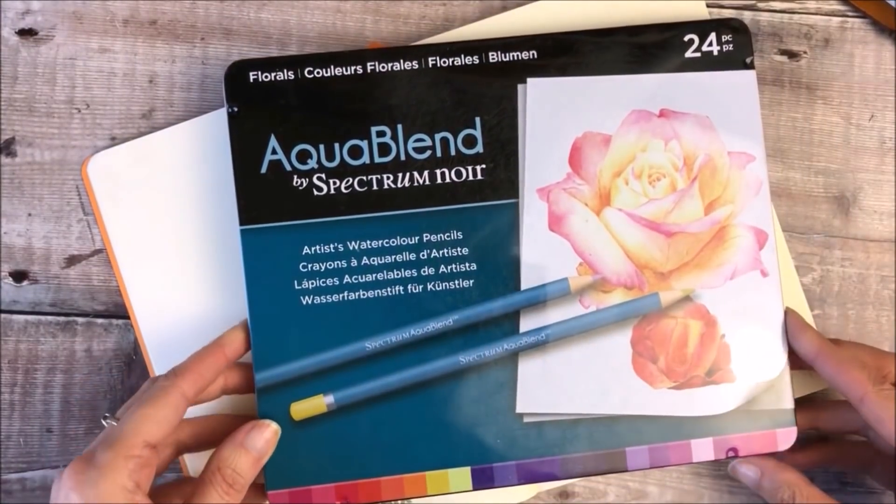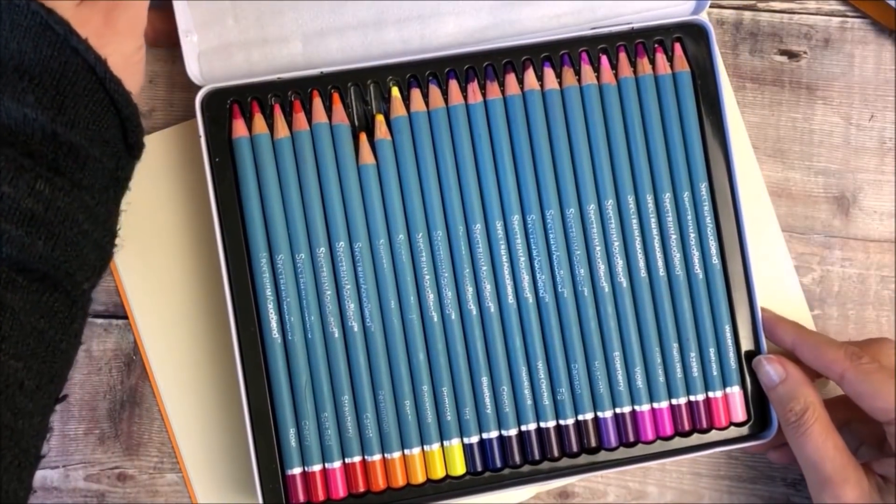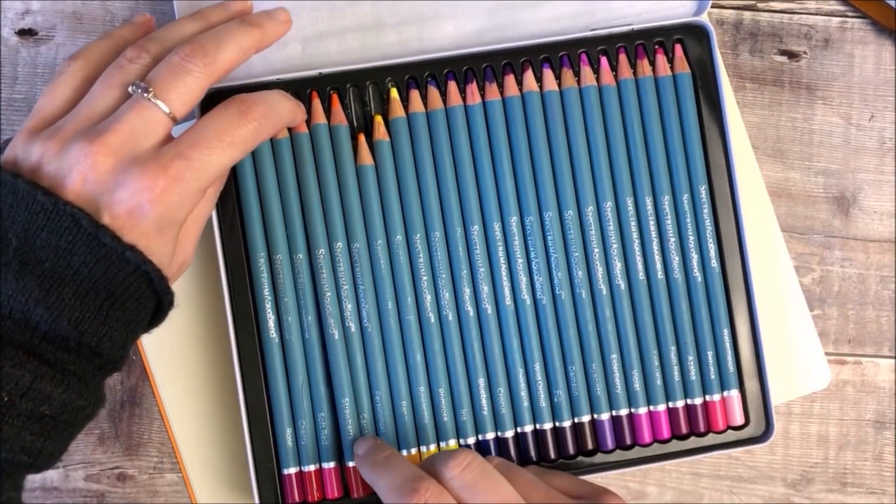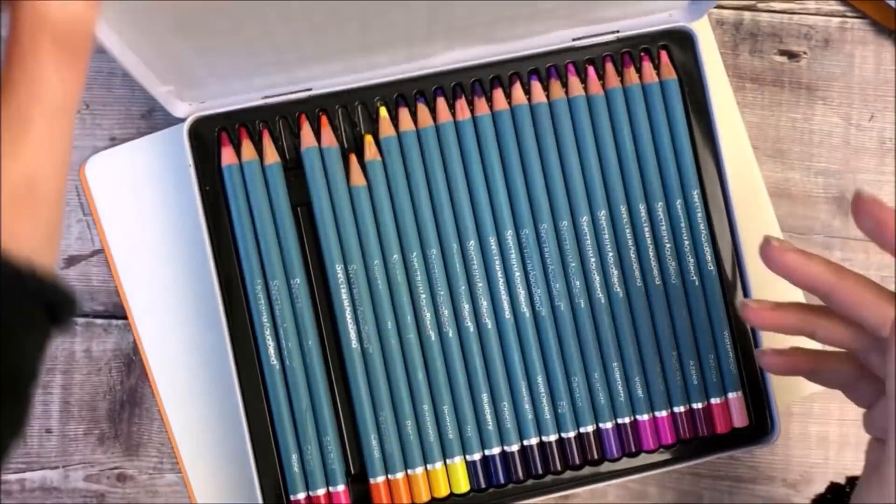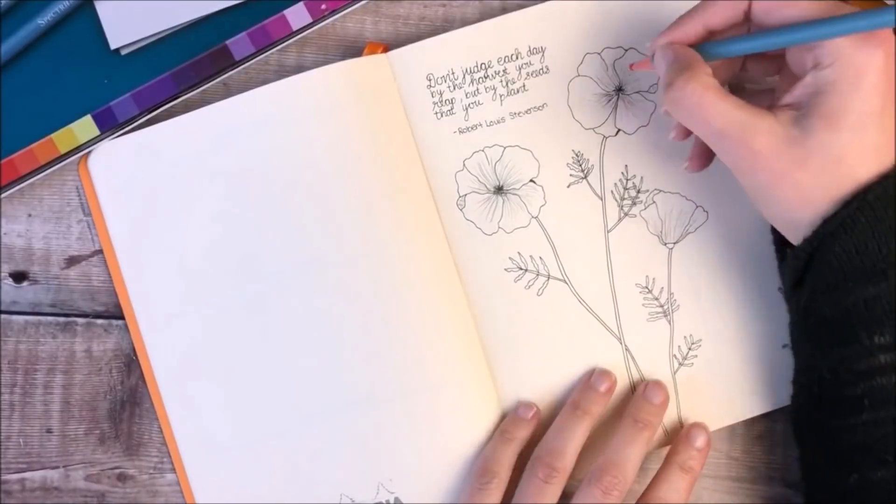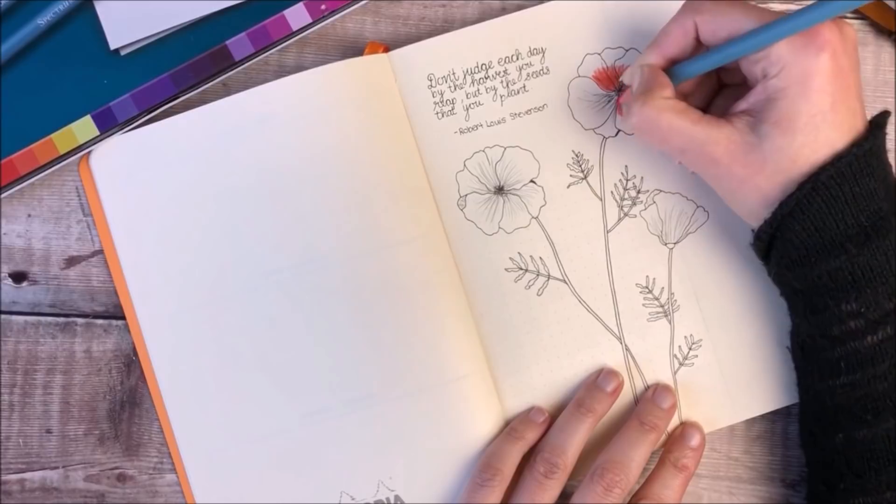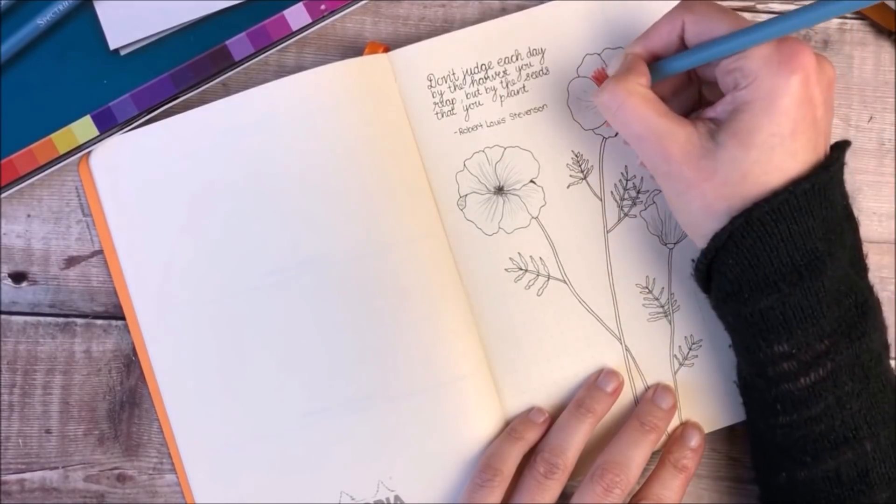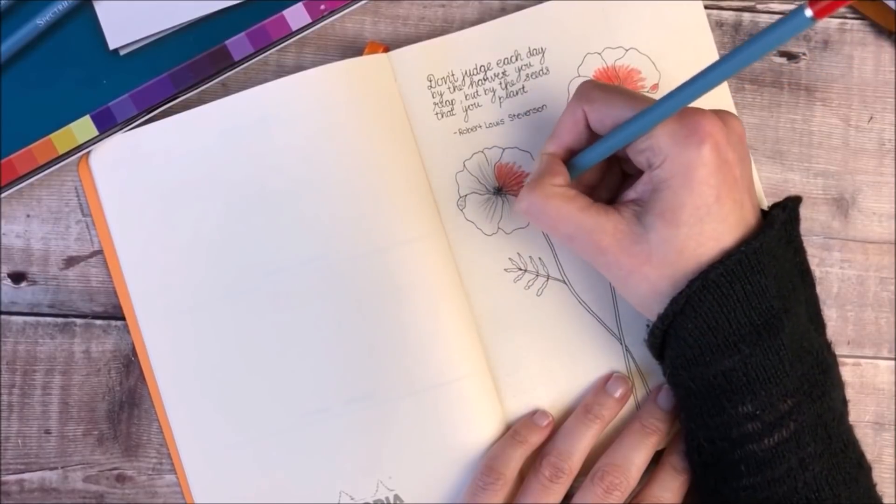The watercolour pencils I'm using are the floral set of the AquaBlend pencils by Spectrum Noir and I'll be using the colour strawberry. I really love using these pencils. They've got a lot of pigment in them and you'll see when I add the water that the colour will blend out a long way.